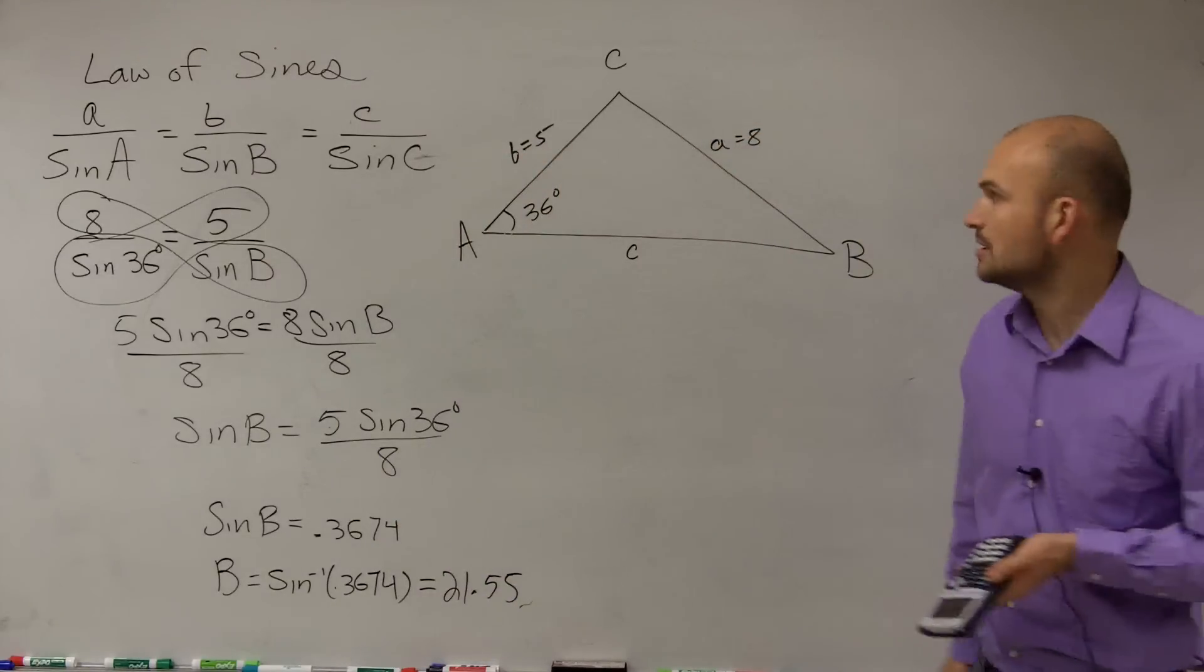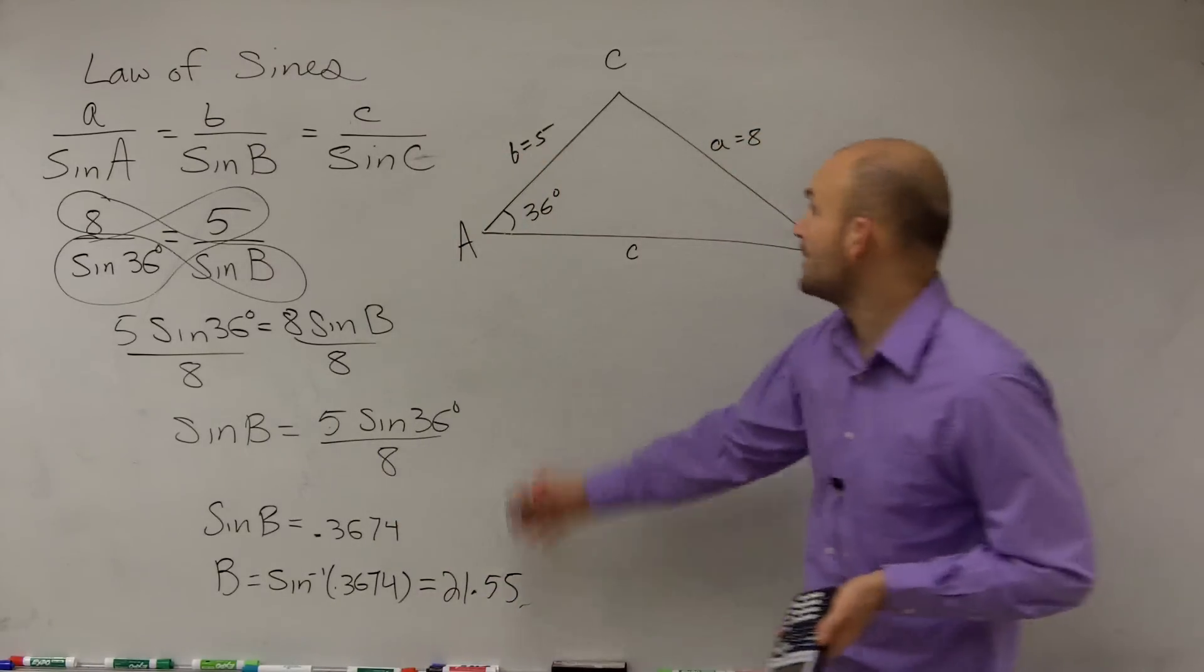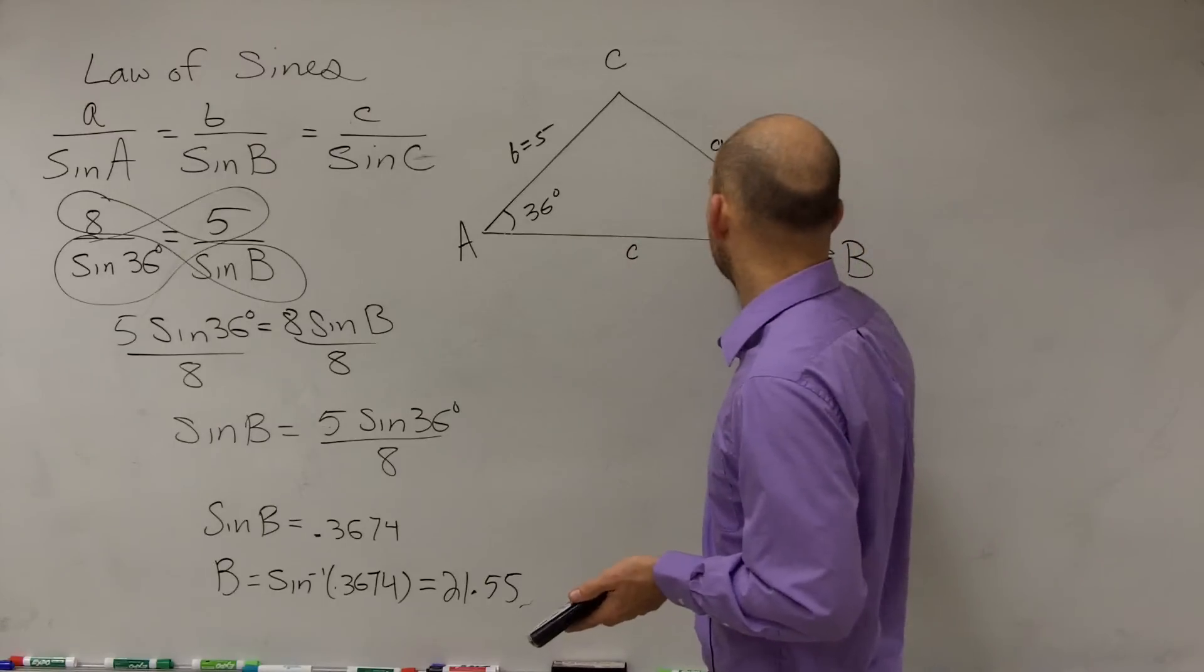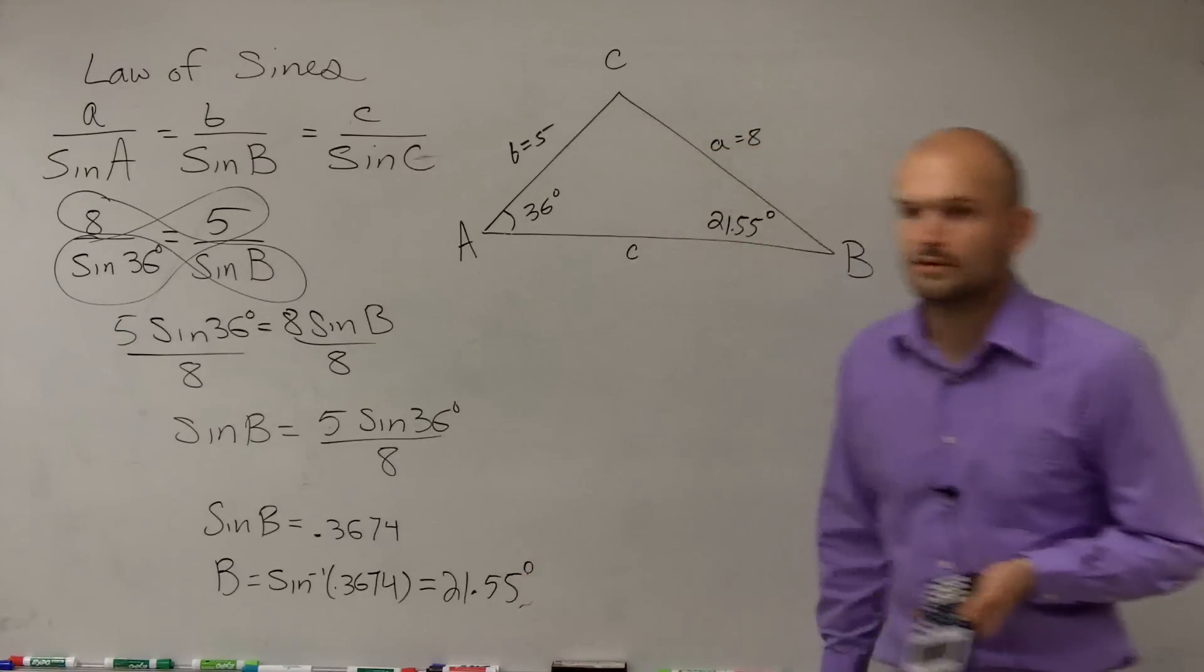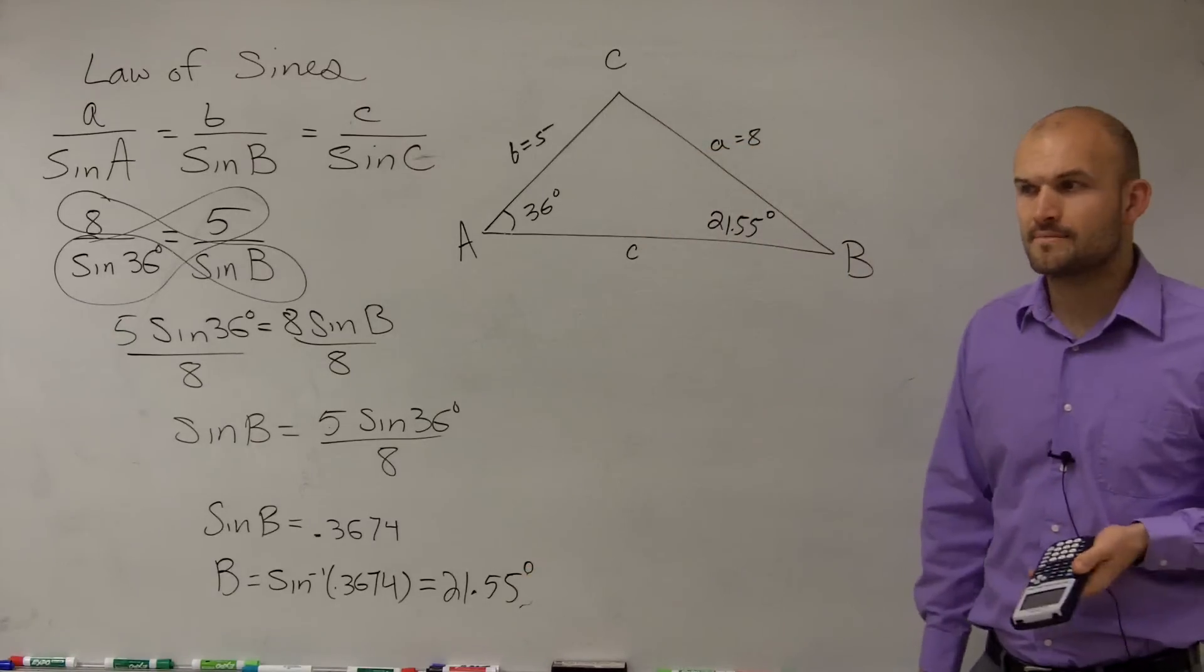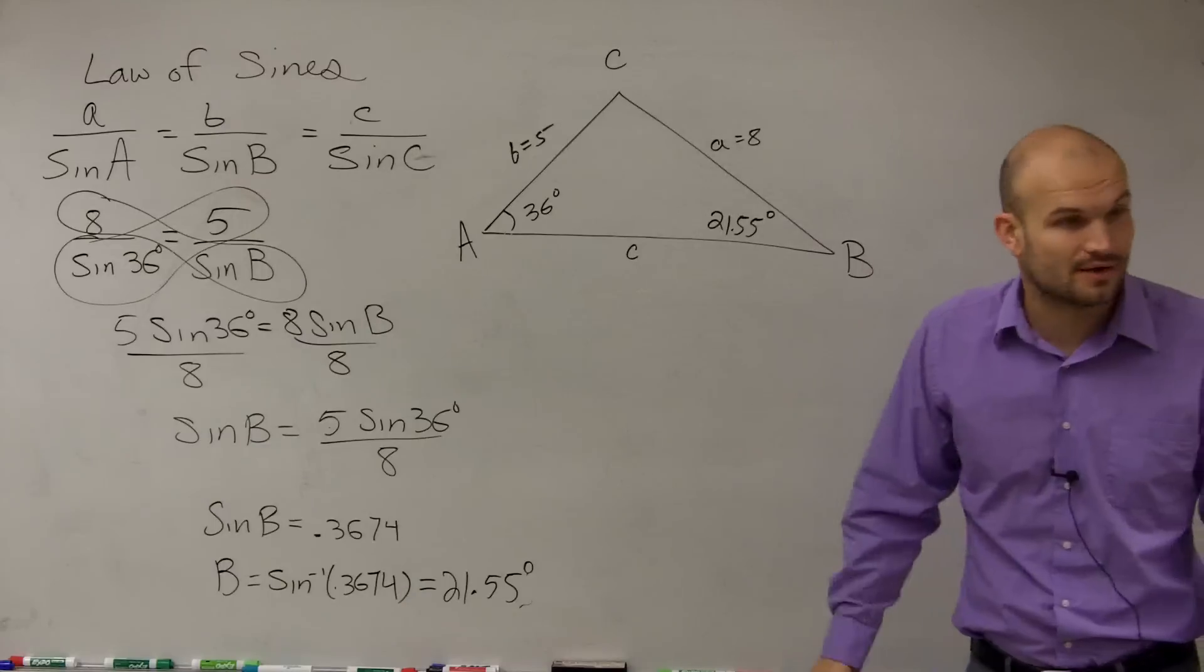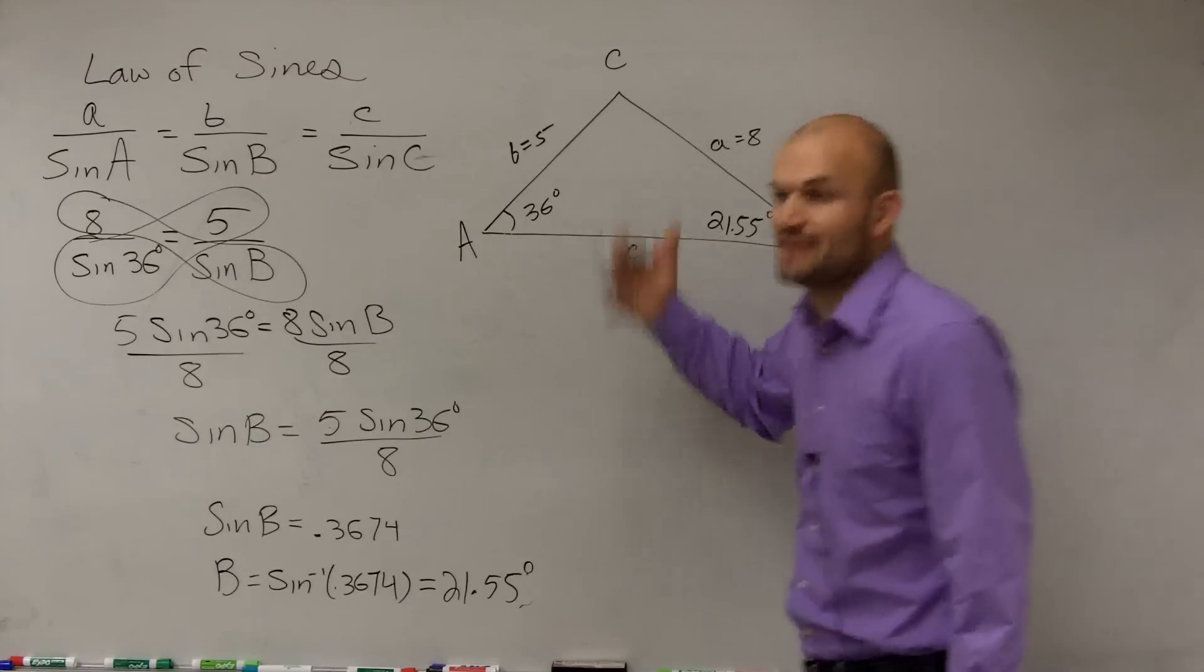And that's going to give us 21.55 degrees. So we can say B is going to equal 21.55 degrees. Does everybody kind of follow me with that? Now, we still haven't found anything with C, though. We need to find all the missing values of this triangle.